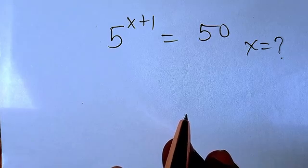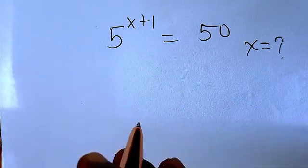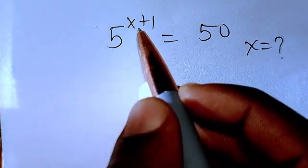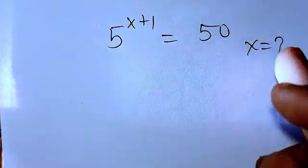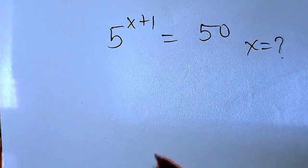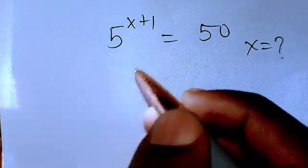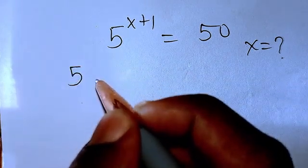Hello good viewers, you are welcome. We have been given this question to solve: 5 to the power x plus 1 equals 50. What is the value of x? Now I will write this equation as 5 to the power of x multiplied by 5 to the power of 1, that is from the law of indices.